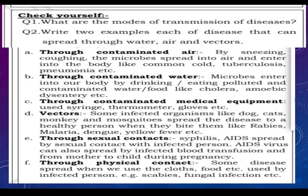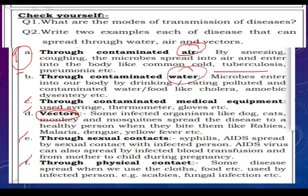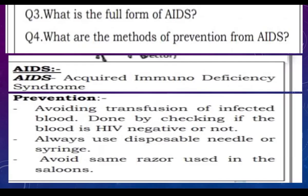Question 1 and 2 answers: What are the modes of transmission of disease? Write through contaminated air, contaminated water, contaminated medical equipment, vectors, sexual contact, and physical contact. For two examples each — air-borne: common cold and tuberculosis; vector-borne: rabies and malaria; water-borne: cholera and amoebic dysentery.